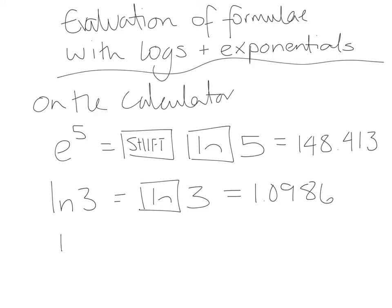Two more examples. If we do 10 to the power of 4, that one you've probably been quite familiar with already. So you would have 10, then you would use your power button, which is normally an x with a little box on it, and then 4 for the power. And that gives us 10,000.